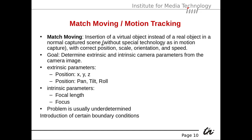This leads us to match moving and motion tracking. Match moving is the insertion of a virtual object in place of a real object in a normally captured scene, without special technology such as motion capture, with correct position, scale, orientation, and speed. The goal is to determine extrinsic and intrinsic camera parameters from the camera image.